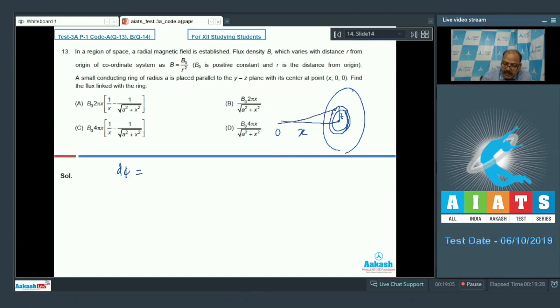The flux through this ring, this ring is an element of radius T and width dt. So, d phi will be, and let us say every point of this ring is at distance R from O. So, the magnetic field is B0 upon R square. Area of this element that we have taken is 2 pi T dt. And since the field lines are not normal to this, so we have to take a factor of cos theta, which is again equal to B0 by R square into 2 pi T dt. The cos theta will be equal to X upon R.